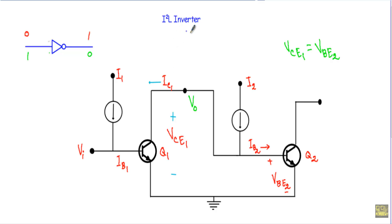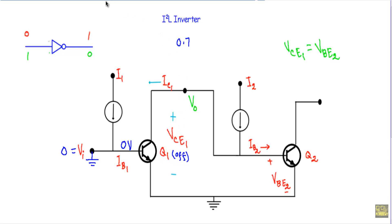Now let me describe the logical operation of the I²L inverter circuit. First, when the input is at logic 0, that means I apply 0 volt — this terminal is directly grounded. The base terminal of transistor Q1 has a voltage of 0 volt, so transistor Q1 will be in the off state, because to turn on a transistor we need a voltage greater than 0.7 volt at the base. When Q1 is off, its collector and emitter terminals act like an open switch, so the collector current IC1 will be equal to 0 ampere.